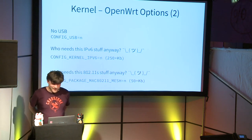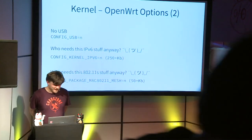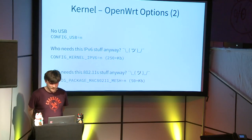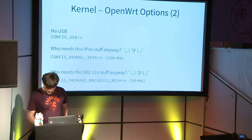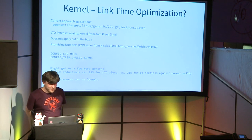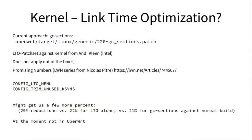Several people ask how to disable legacy IPv4 features — you have to dig into the Linux kernel configuration to see what you can drop. But a general approach that's missing in OpenWRT and that a lot of embedded developers use is link-time optimization for the kernel.